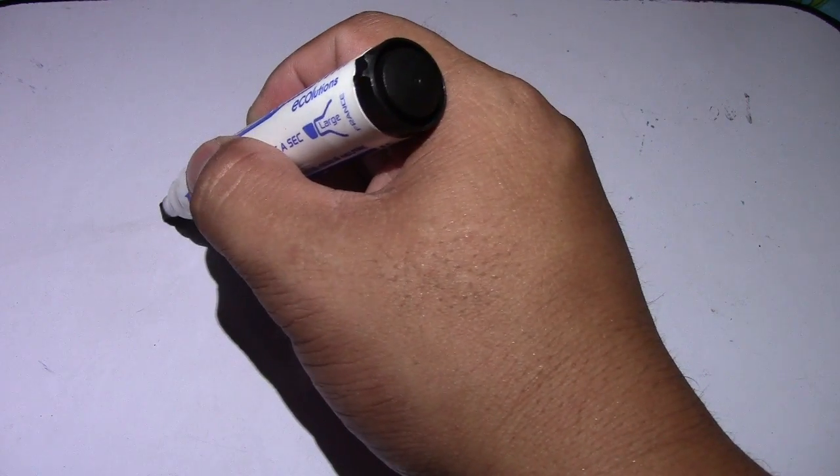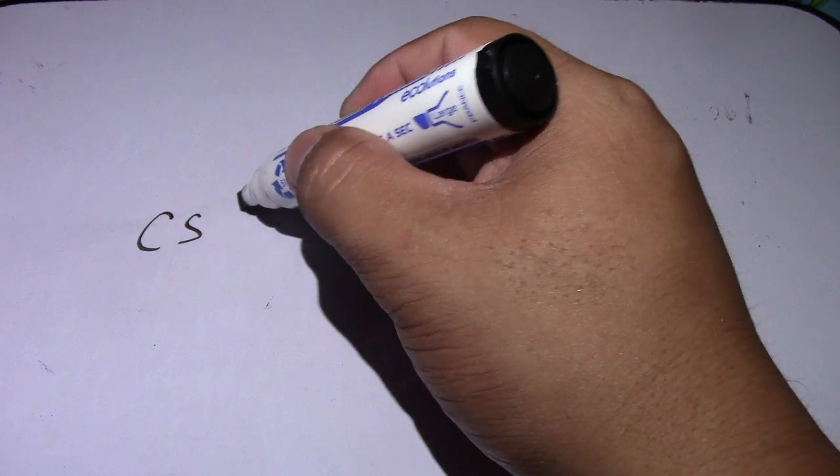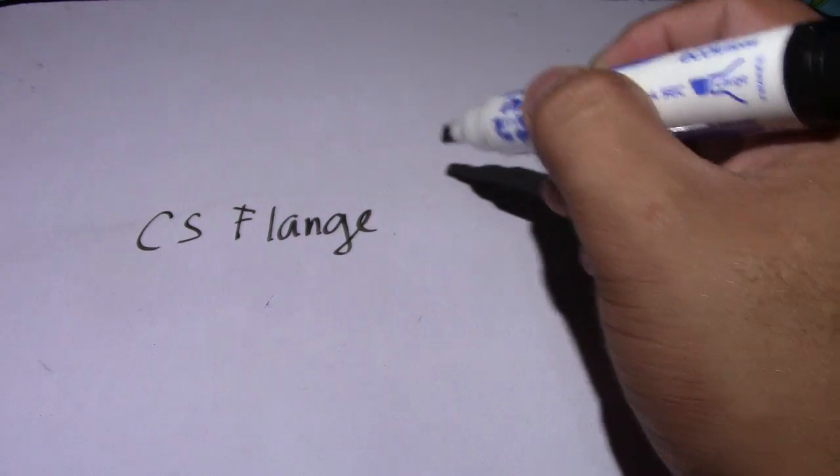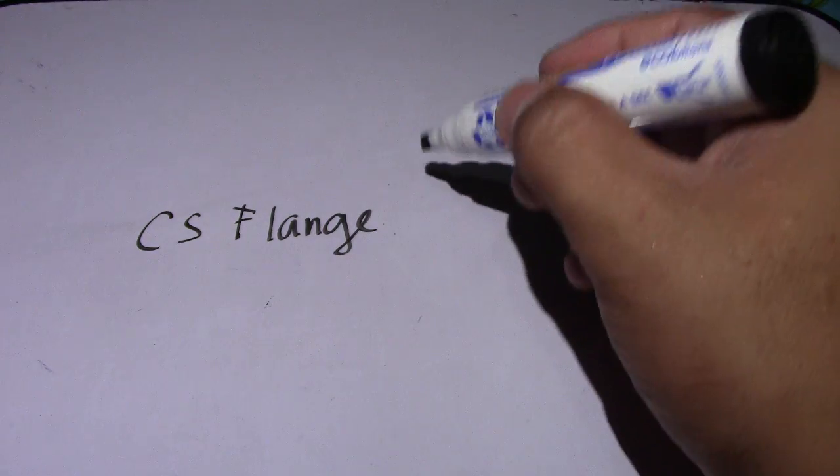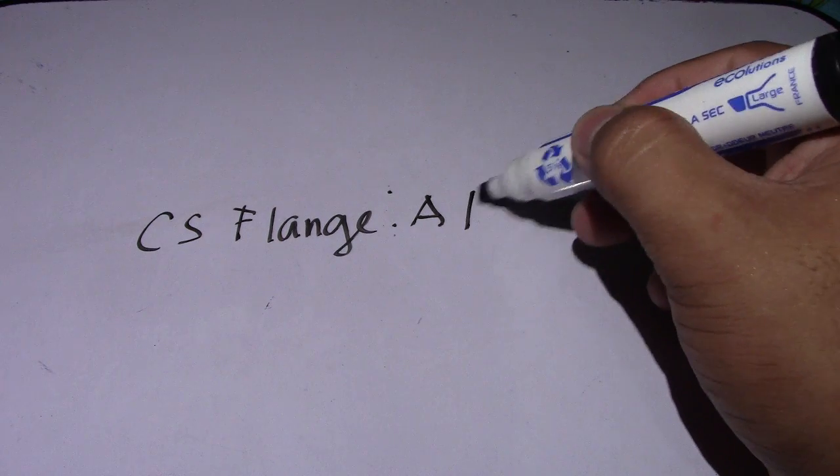Starting with the fittings, CS flanges. This is material specification. Carbon steel flanges - this is A105, and this is forging.